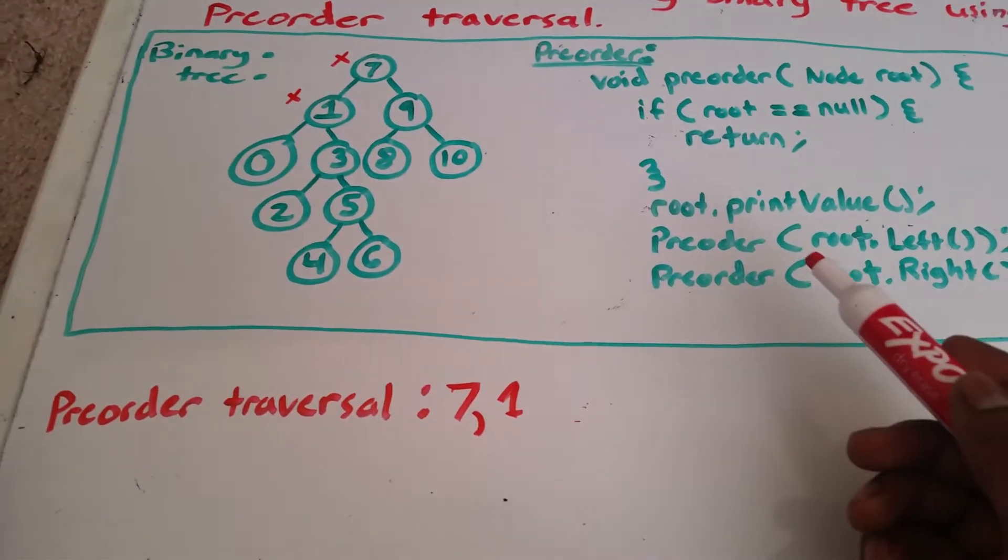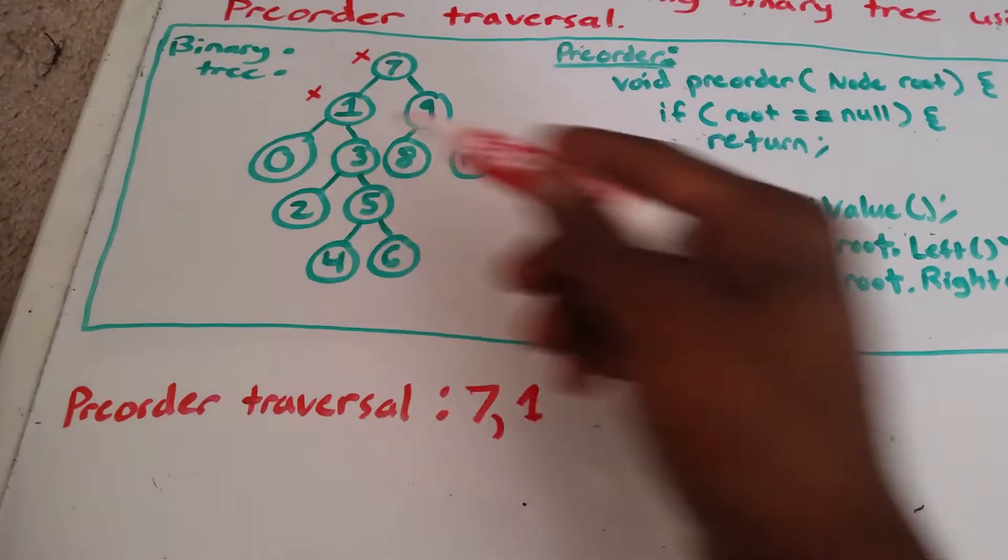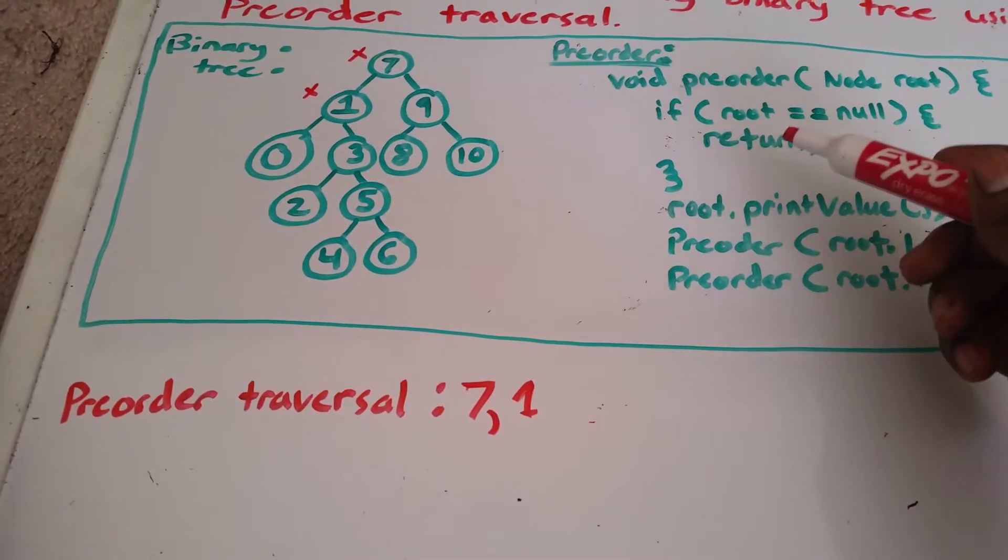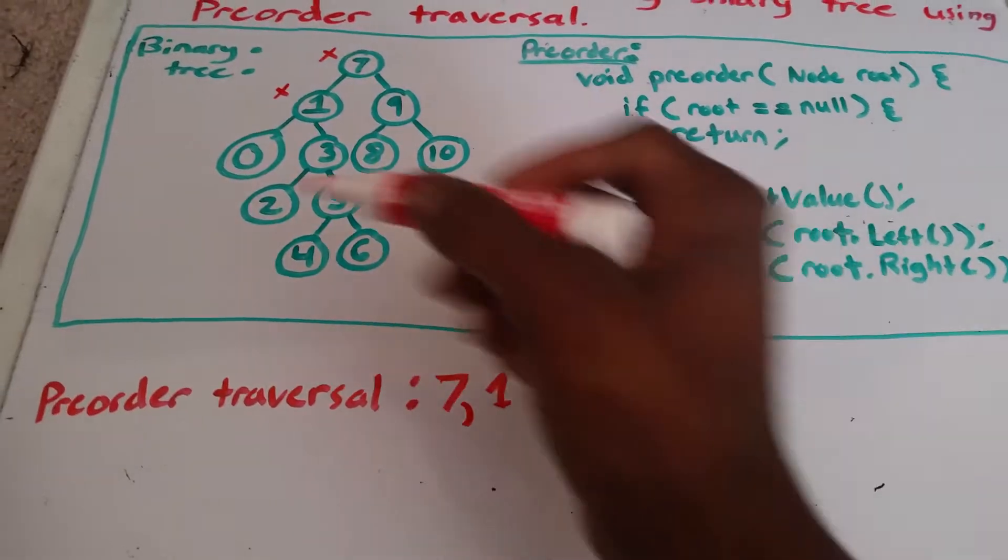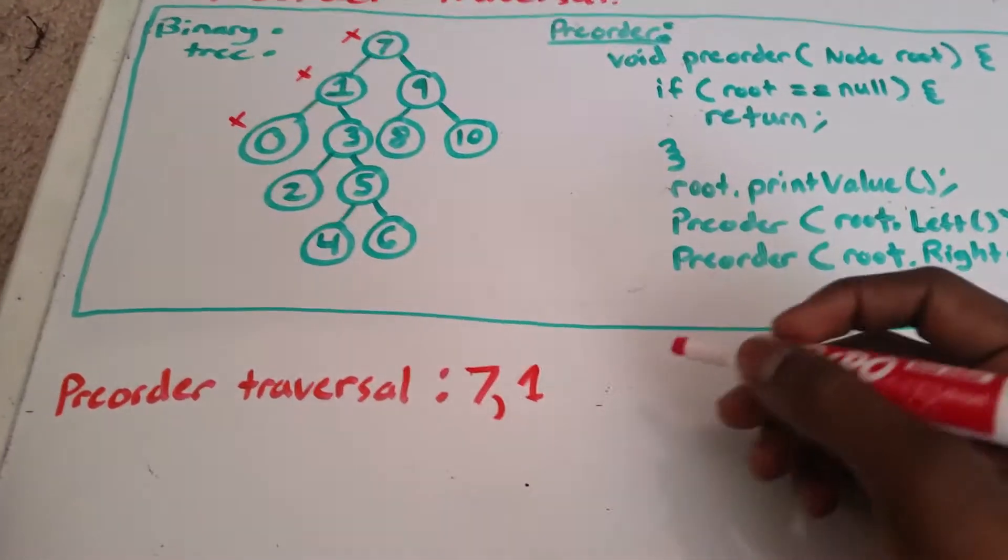So now we need to go left again, according to the code here. And we get 0, is 0 null? No. Then we go ahead and print 0, and then we're going to go left. So let's go ahead and print 0.